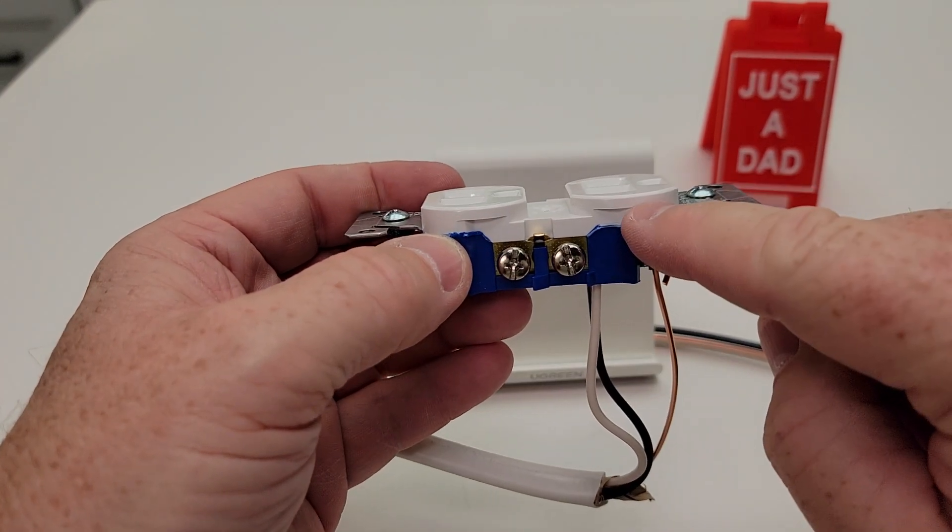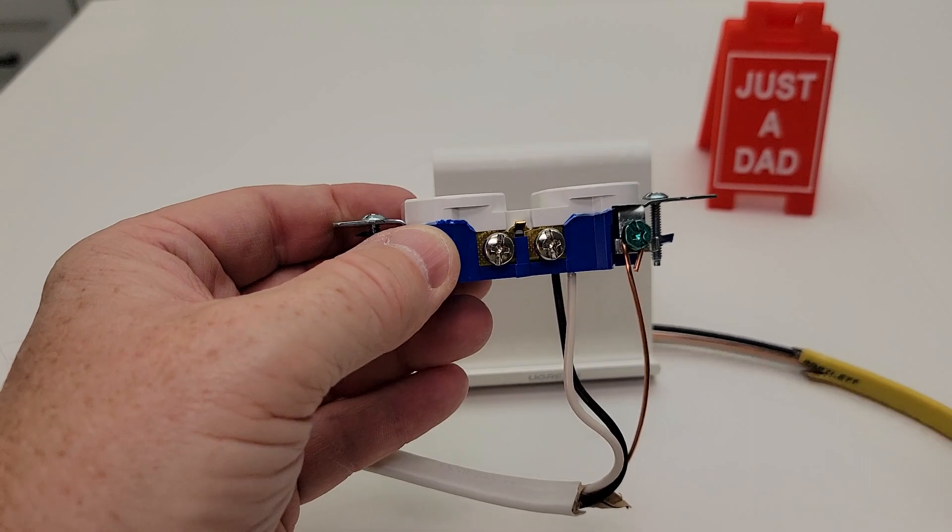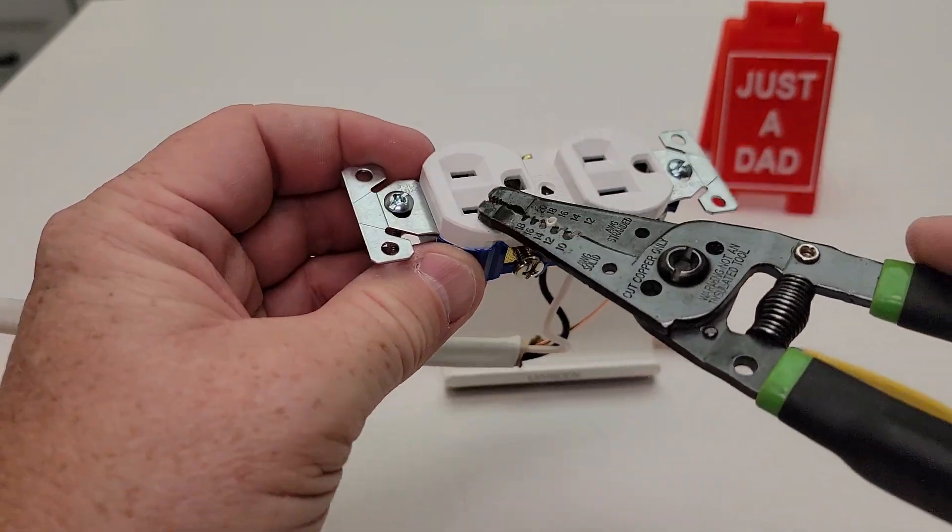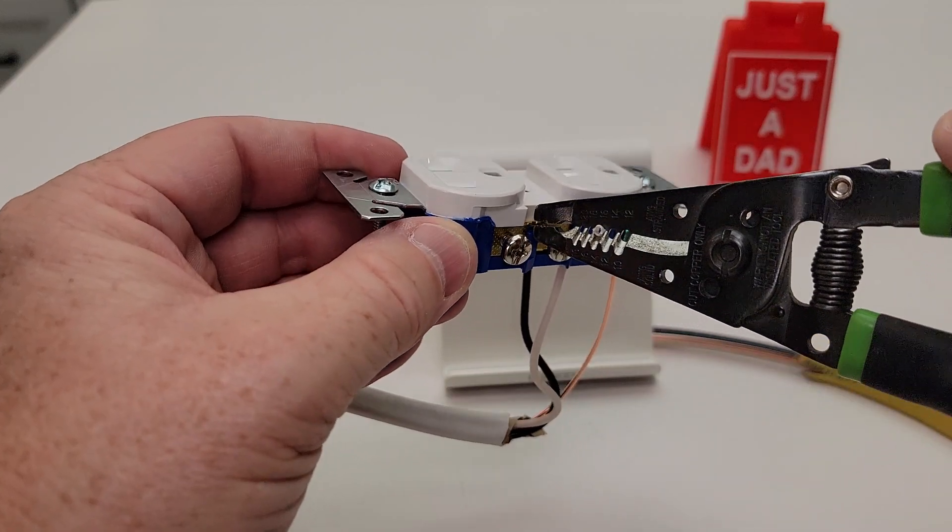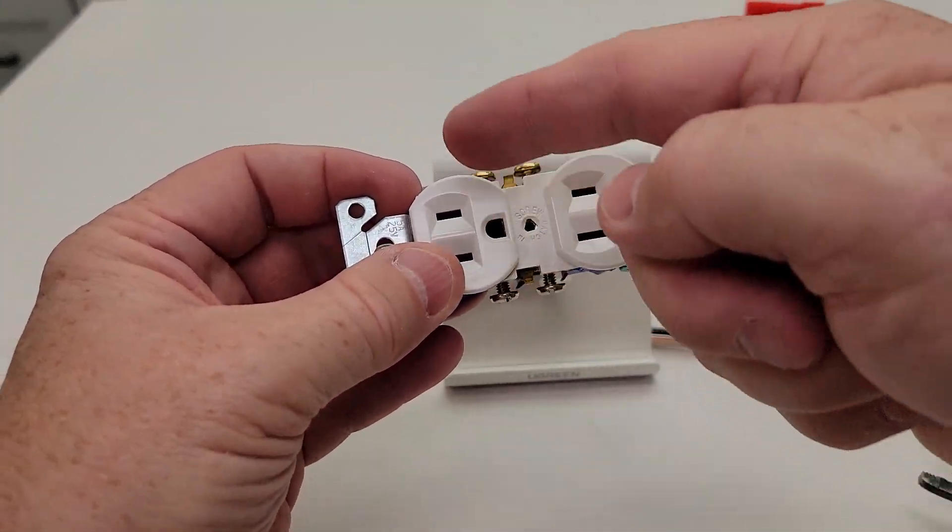Now, if I want to power this receptacle from a different power source than this one, I can break this little tab. But you're going to leave that tab installed if you want the power to be for both receptacles. But if I wanted to, I'd have to break that tab off. That separates these receptacles in half.